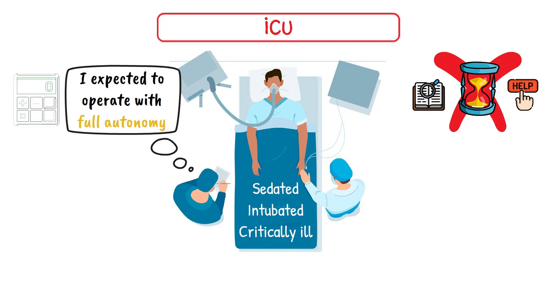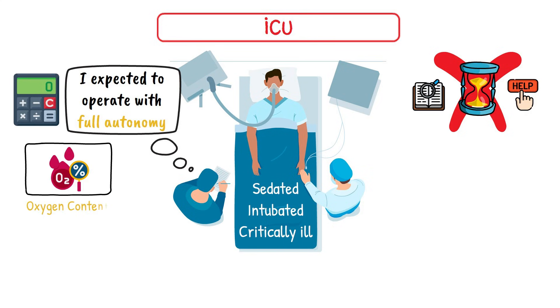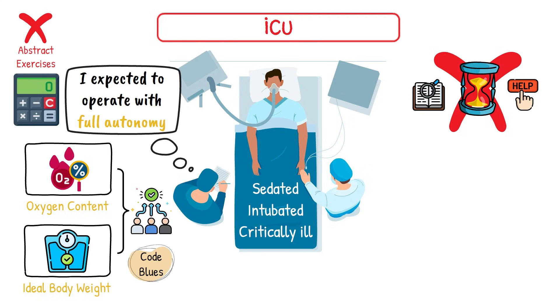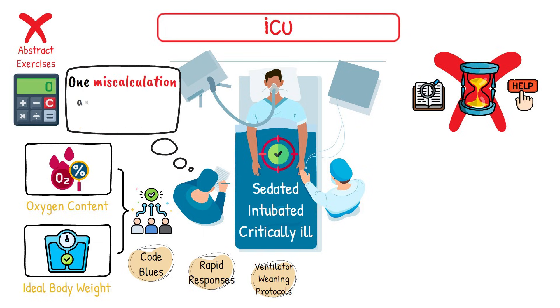You must be able to calculate oxygen content or ideal body weight on the spot. These are not abstract exercises. They're decisions you'll make during code blues, rapid responses, and ventilator weaning protocols. Accuracy in these moments isn't optional. A mistake in your math could result in a dangerously low ventilator setting or an inappropriate oxygen level, both of which can have serious consequences.